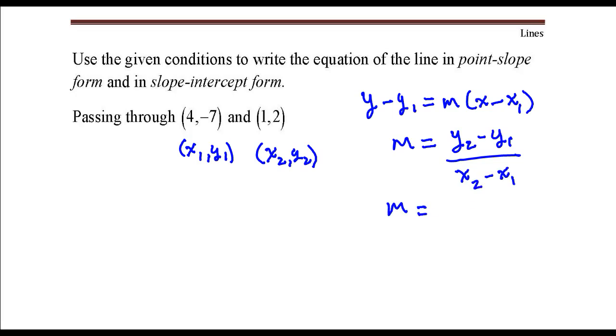So the slope in this case is y2, 2 minus y1, which is negative 7. Everything is divided by x2, 1 minus x1, that's 4.